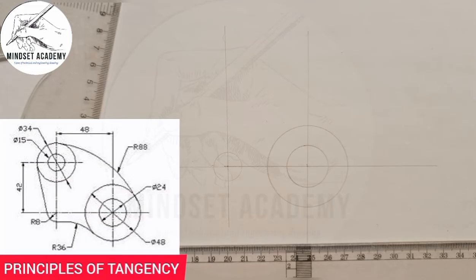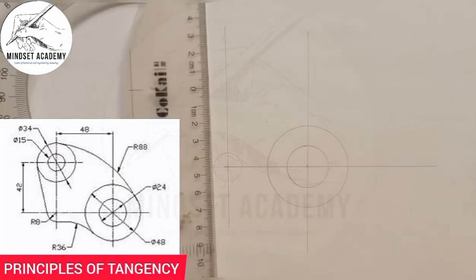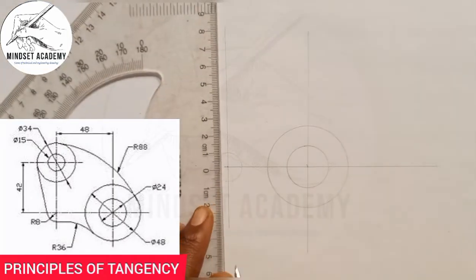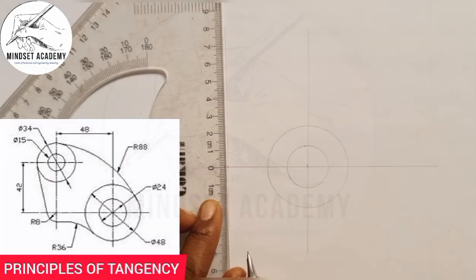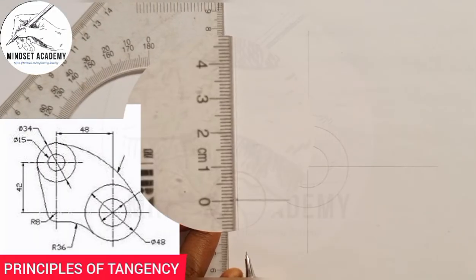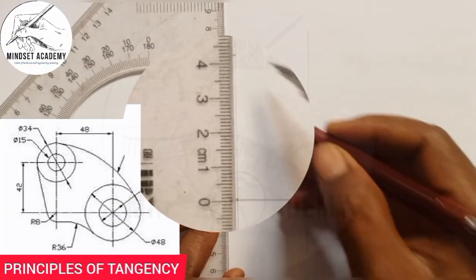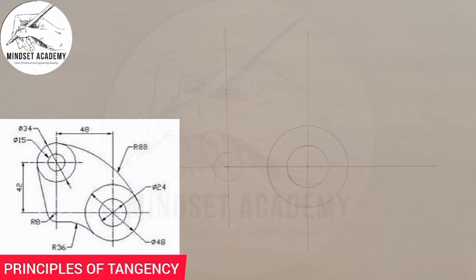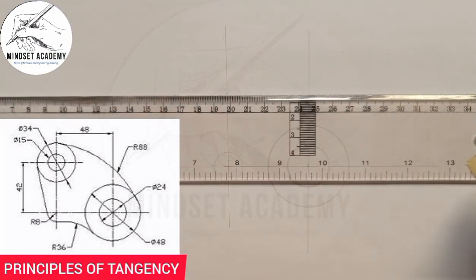From this center to the next center is given as 42. From 0 I measure 42 on my meter rule — here is 42 — and I draw a line across that point.